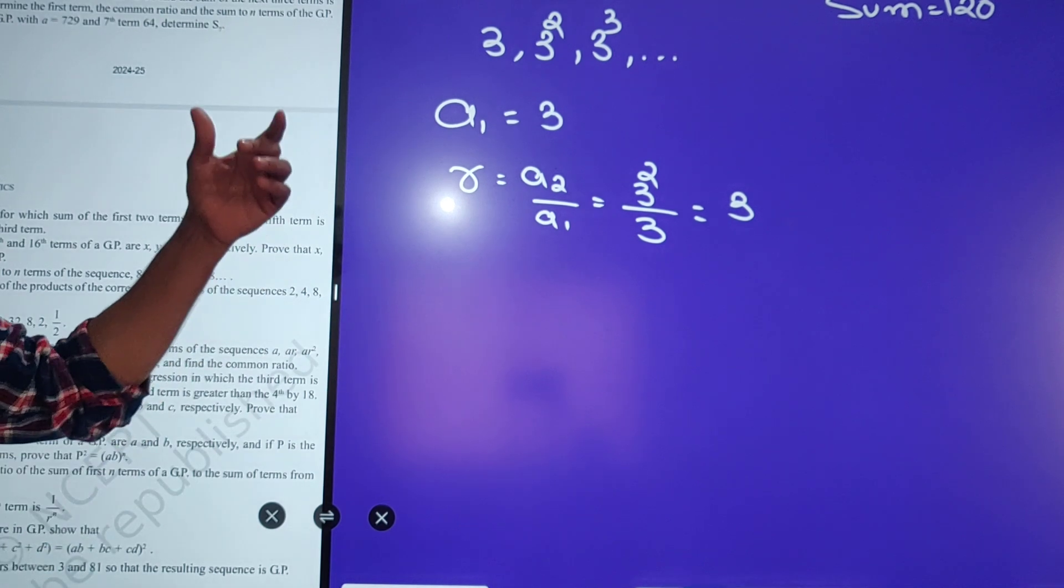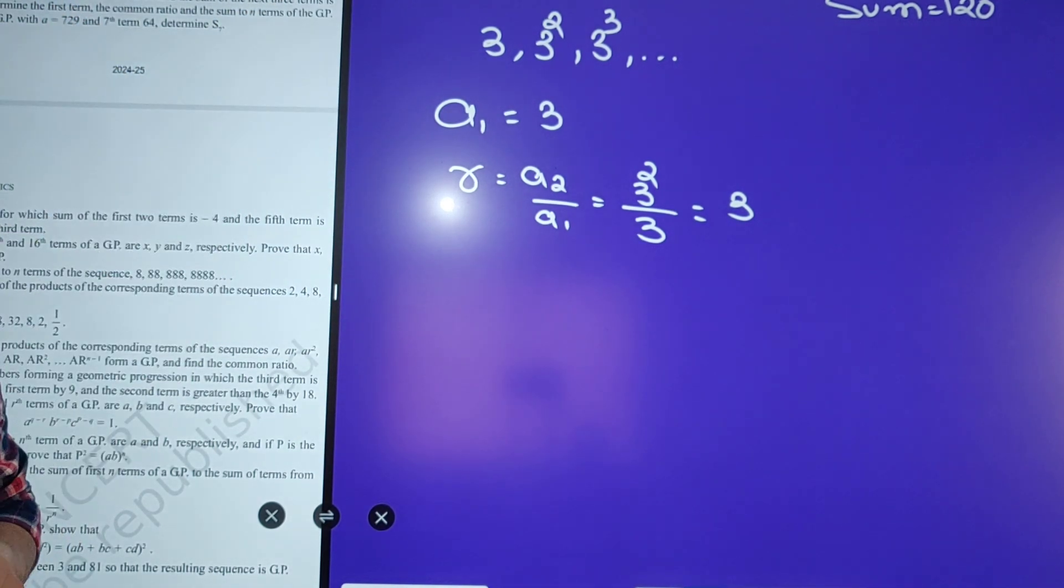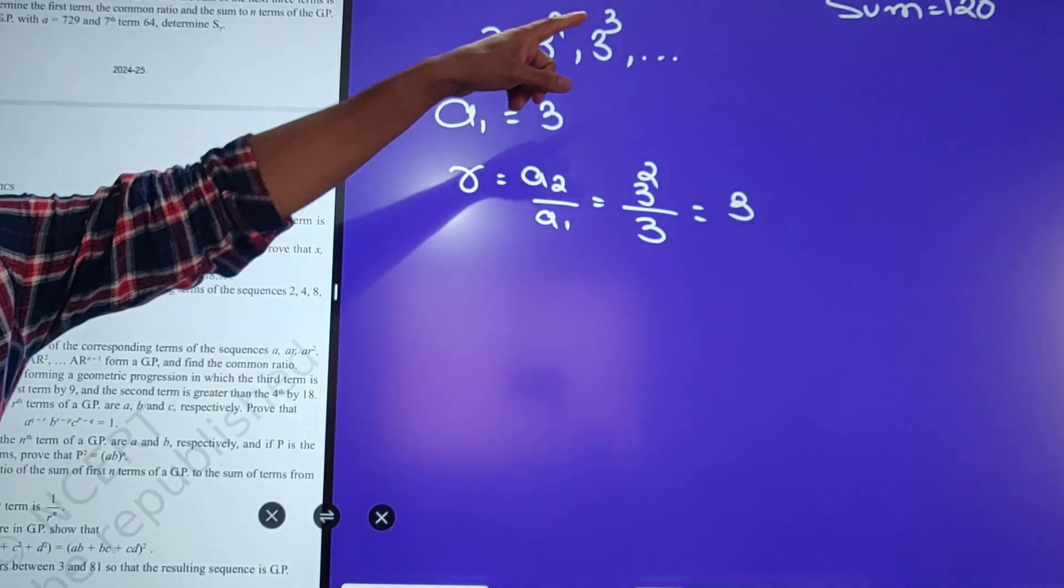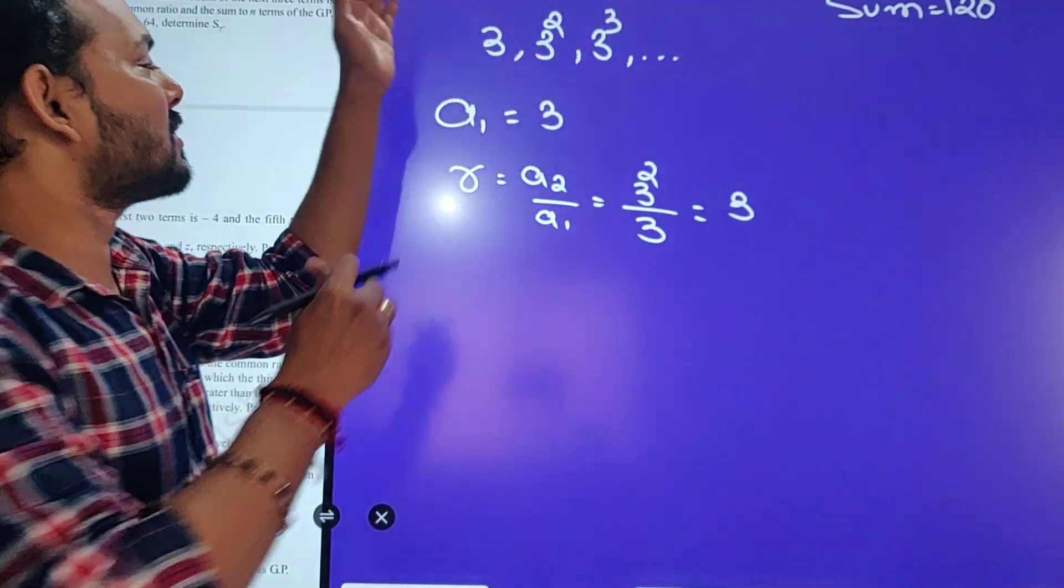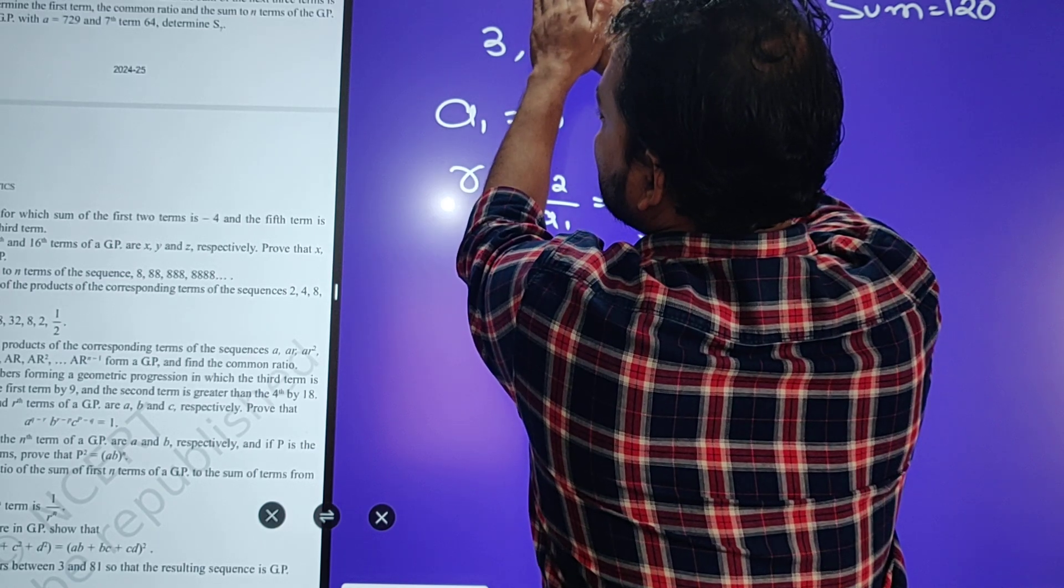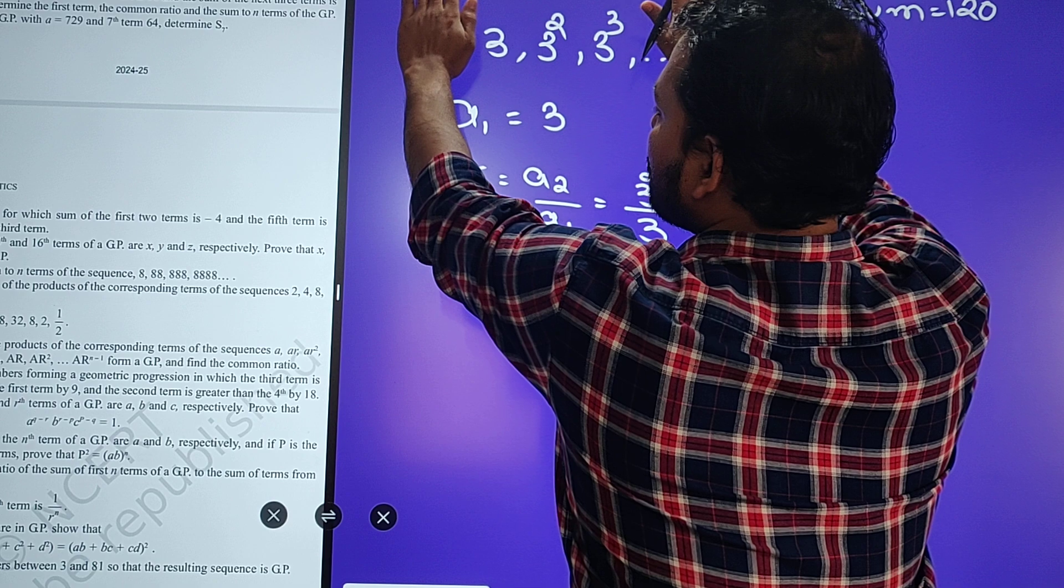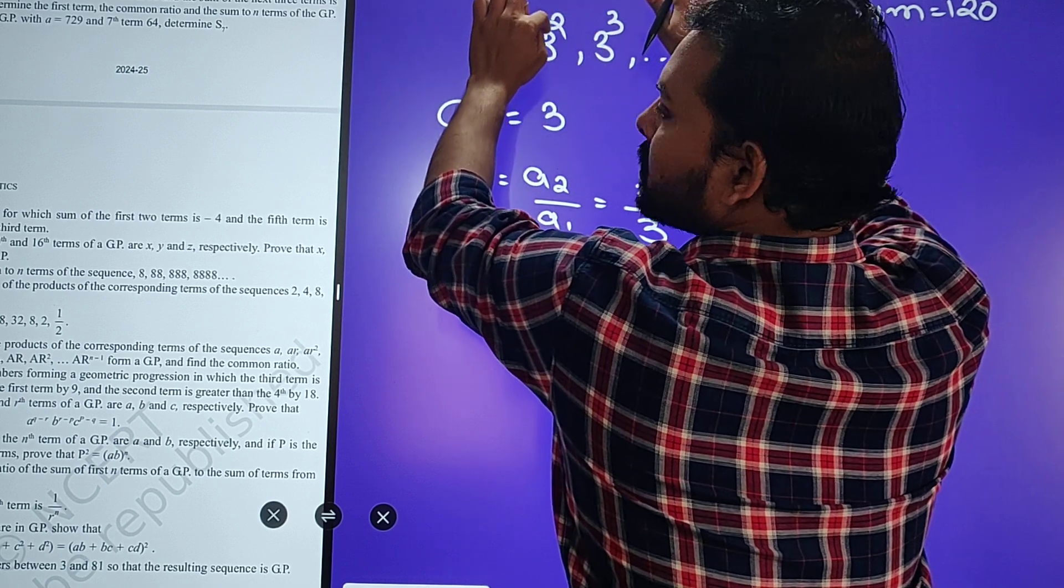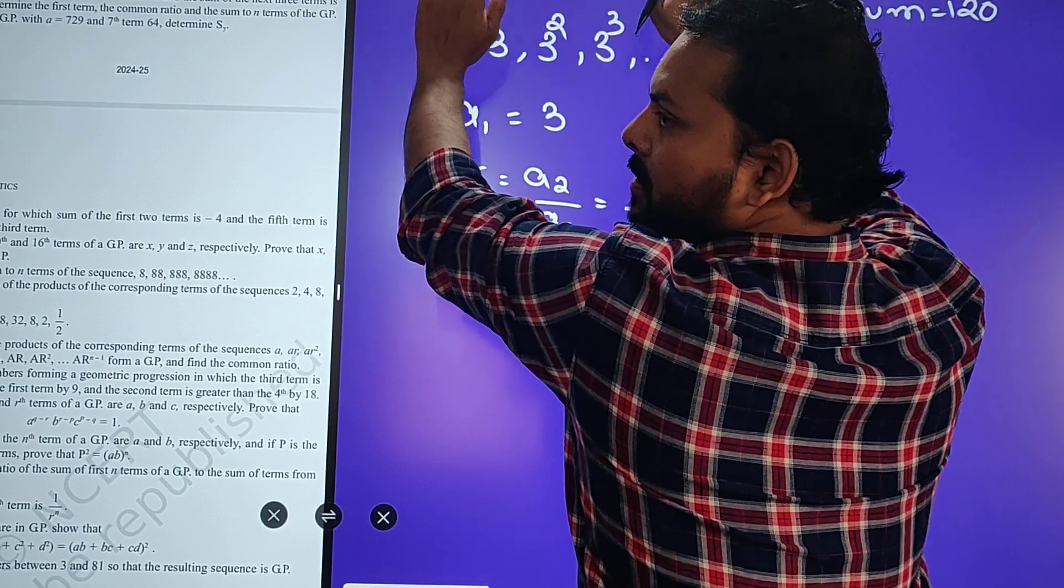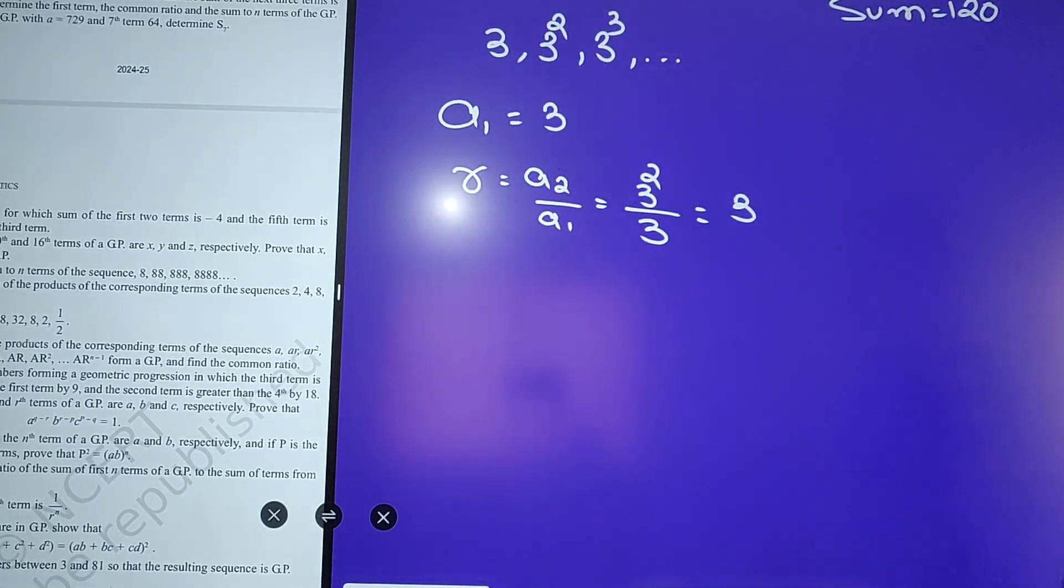So, a and a2 by a1. Sum itna ho na chahiye, aisa bula hai. Kitni terms lenge? Kya dunna hai? N. N dunna hai. Sum itna hai, bhol diya hai. So, kitni terms lenge? Sum 120 ho ga. Okay.